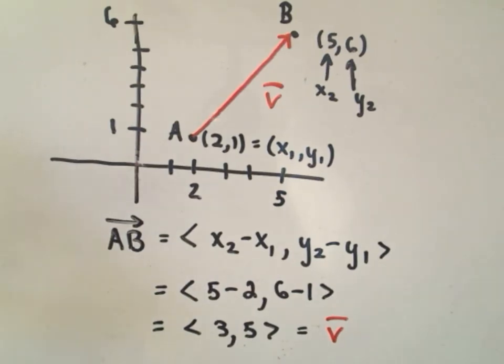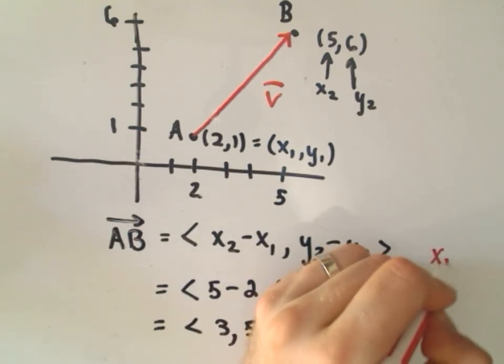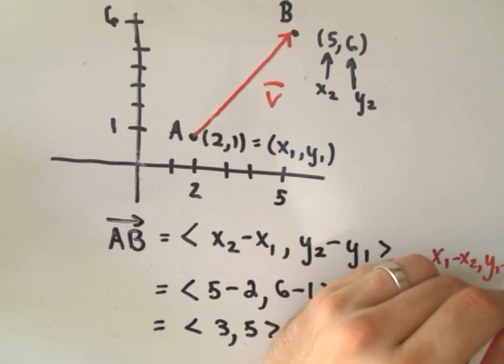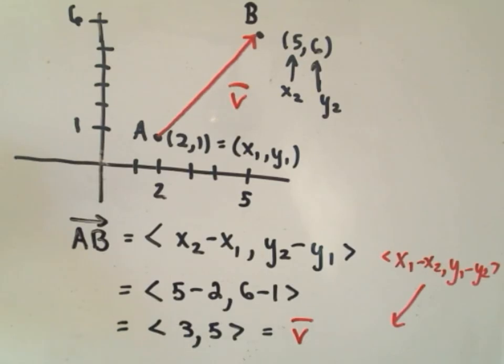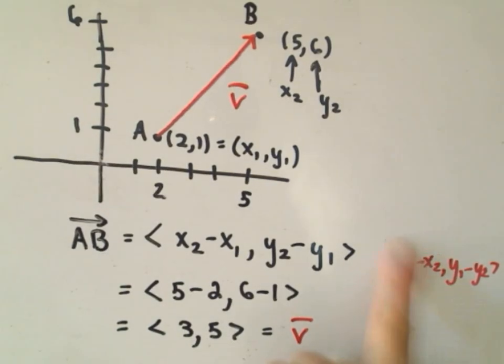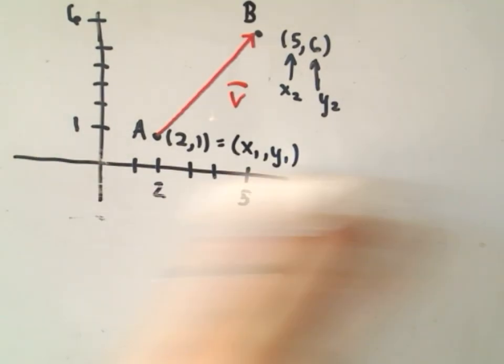Pretty easy — all you're doing is subtracting X coordinates and subtracting Y coordinates. Notice that if we switched the order and did X₁ minus X₂ and Y₁ minus Y₂, we'd be finding that same vector but in the opposite direction. Order matters because it dictates the direction you get. So, two other things: let's talk about adding vectors algebraically and multiplying by a scalar.